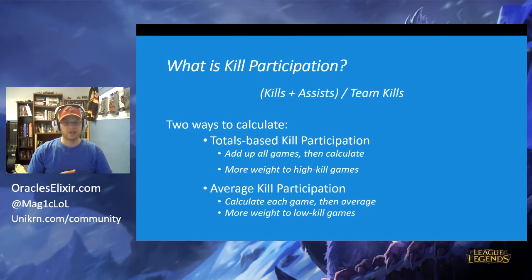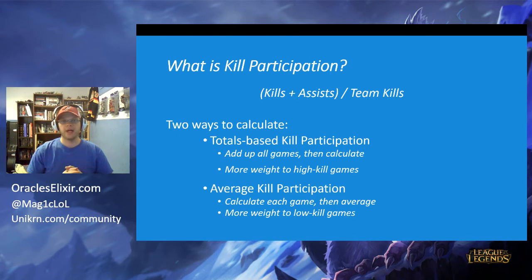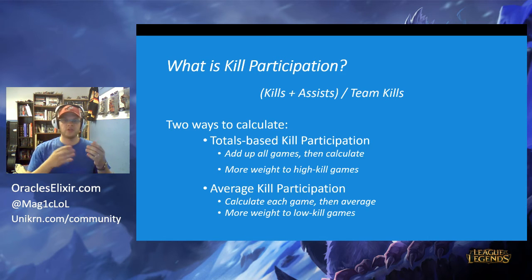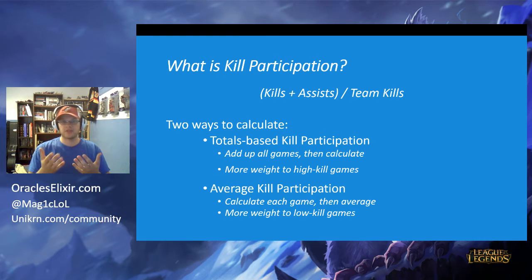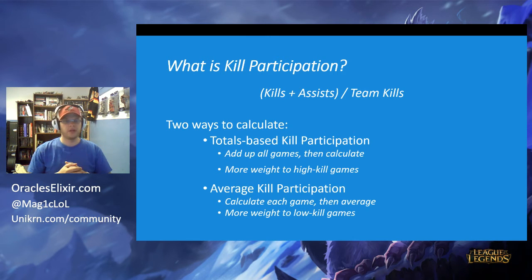Let's get started by talking about the kill participation formula. At its most basic, if you're talking about a single game, kill participation is when you take one player's kills plus assists divided by the total kills that their team has earned. So that gives you a certain percentage.